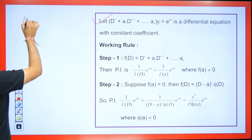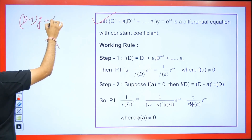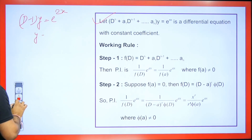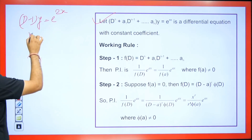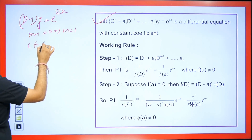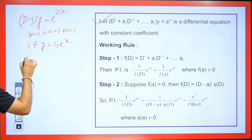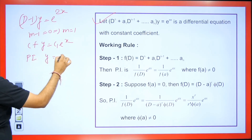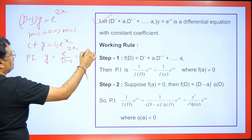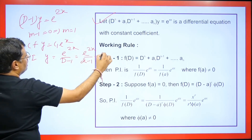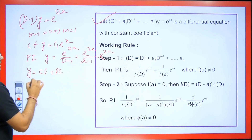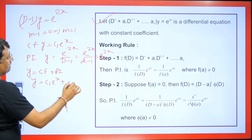Let's take the differential equation (D−1)y = e^(2x). For the CF, we set m−1 = 0, giving m = 1, so CF = c₁e^x. For the PI, we write e^(2x)/(D−1) and replace D with 2, giving e^(2x)/(2−1) = e^(2x). The final answer is y = c₁e^x + e^(2x).